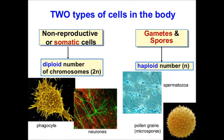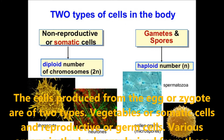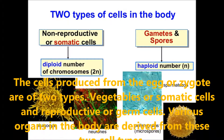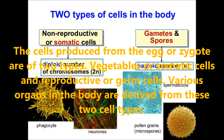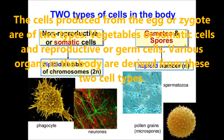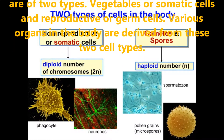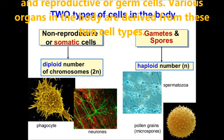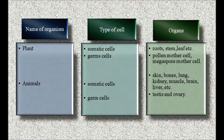The cells produced from the egg or zygote are of two types. They are somatic cells and reproductive or germ cells. Various organs in the body are derived from these two types of cells. For example, plants have somatic and germ cells.